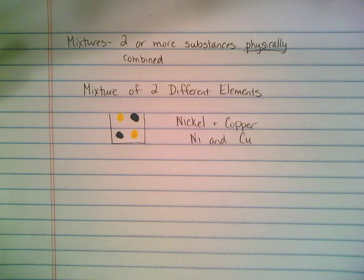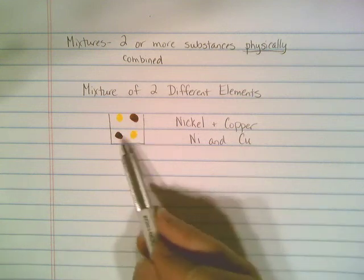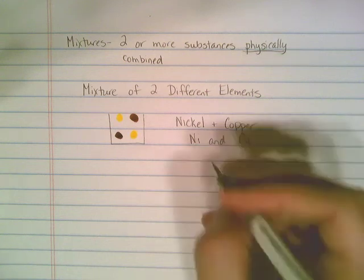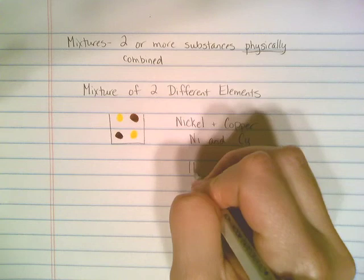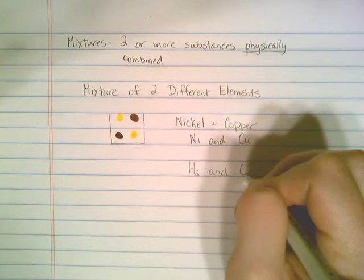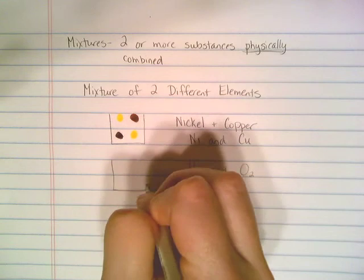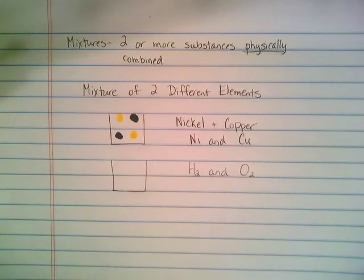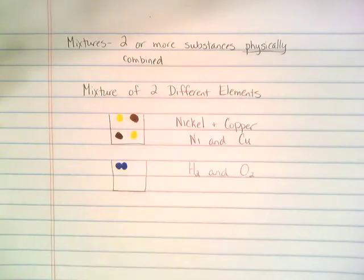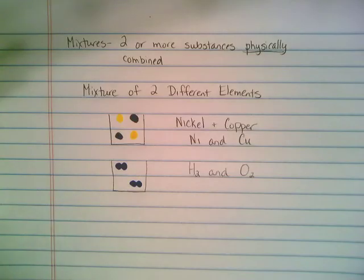You could also have, as another example of a mixture of two different elements, the elements don't have to be as individual atoms. You might also get a mixture of, let's say, you could have hydrogen, H2, and oxygen, O2. If you put those together in the same container, you would have your H2 molecules next to your oxygen molecules.